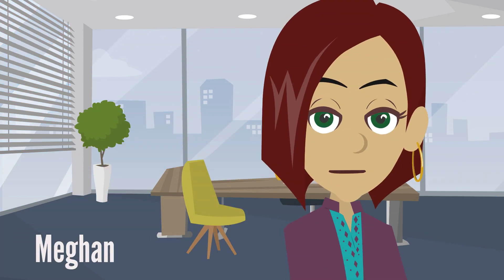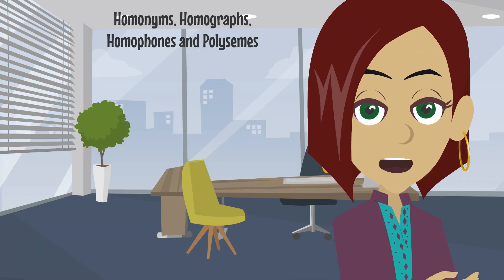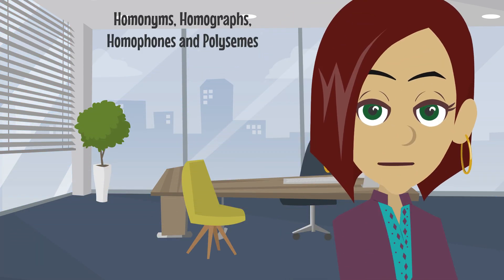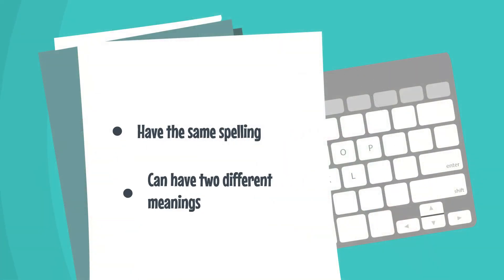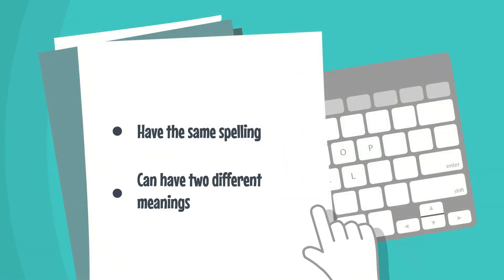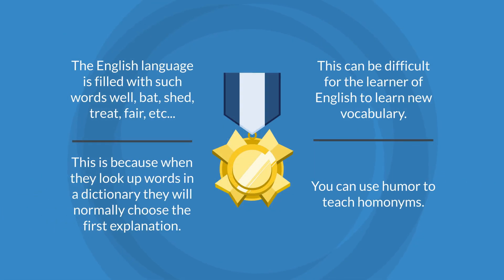Today we are going to discuss homonyms, homographs, homophones, and polysemes. Homonyms are words that share the same spelling but can have two different meanings. The English language is filled with such words: well, shed, treat, fair, etc.